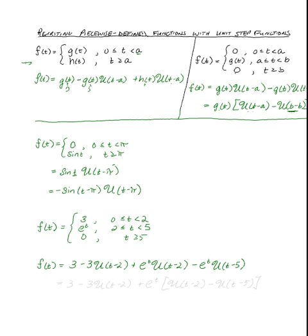What do I want to happen after five? I want a zero. I'm going to get a zero automatically, so I don't need to do anything else. So if I simplify this a little bit, we would have here three minus three times unit step, t minus two, plus e to the t times unit step, t minus two, minus the unit step, t minus five. And now we've rewritten this in terms of those unit step functions.